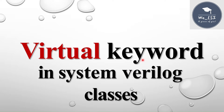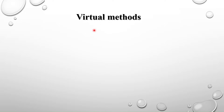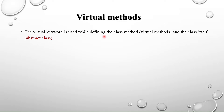Welcome back to SystemVerilog sessions. In this session I am going to discuss the virtual keyword in SystemVerilog classes. We are going to understand what a virtual method is, how it is different from normal methods, and we will see an example at the end. We will also discuss what an abstract class is. The virtual keyword is used while defining a class method and the class itself — when used with the class it is called an abstract class, which is nothing but a virtual class.